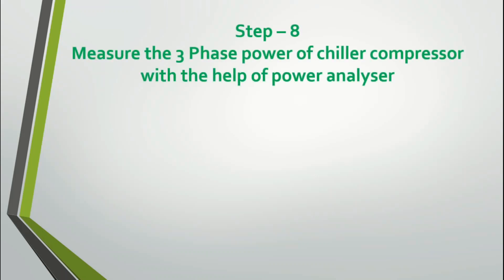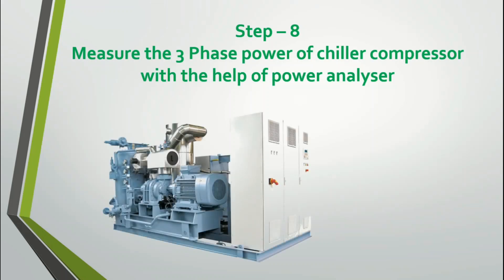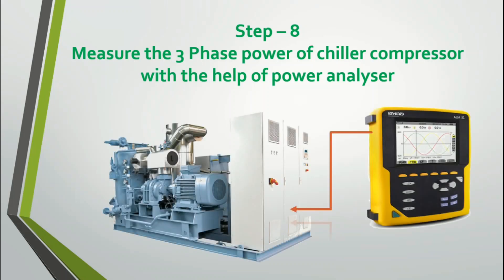Step 8: Measure the three-phase power of the chiller compressor with the help of a power analyzer. Using the power analyzer's clamp meters, both voltage and current are measured at the electrical panel. You should measure only the compressor power — not the pump power or cooling tower accessories like fans. Simply measure the compressor input power, which gives the input electrical energy consumed by the chiller alone.